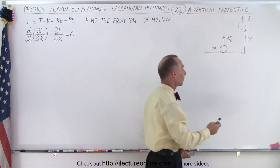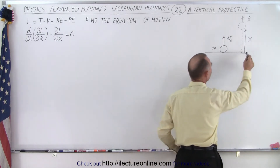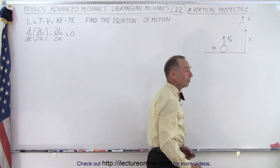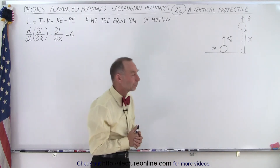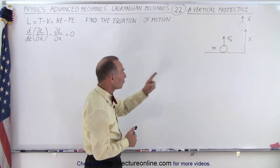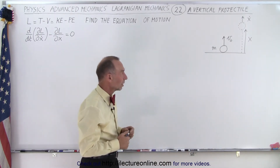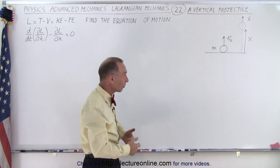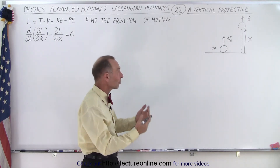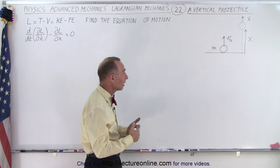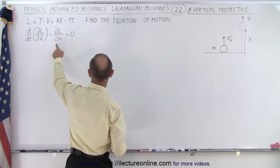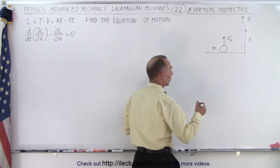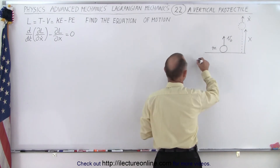After some time has elapsed it will have reached the height of x and it will be moving at some velocity x-dot. So what is the equation of motion of that object? What we need to do is figure out its kinetic energy, then its potential energy, and from that we should be able to use the Lagrangian technique to find the equation of motion. So let's start with the kinetic energy.